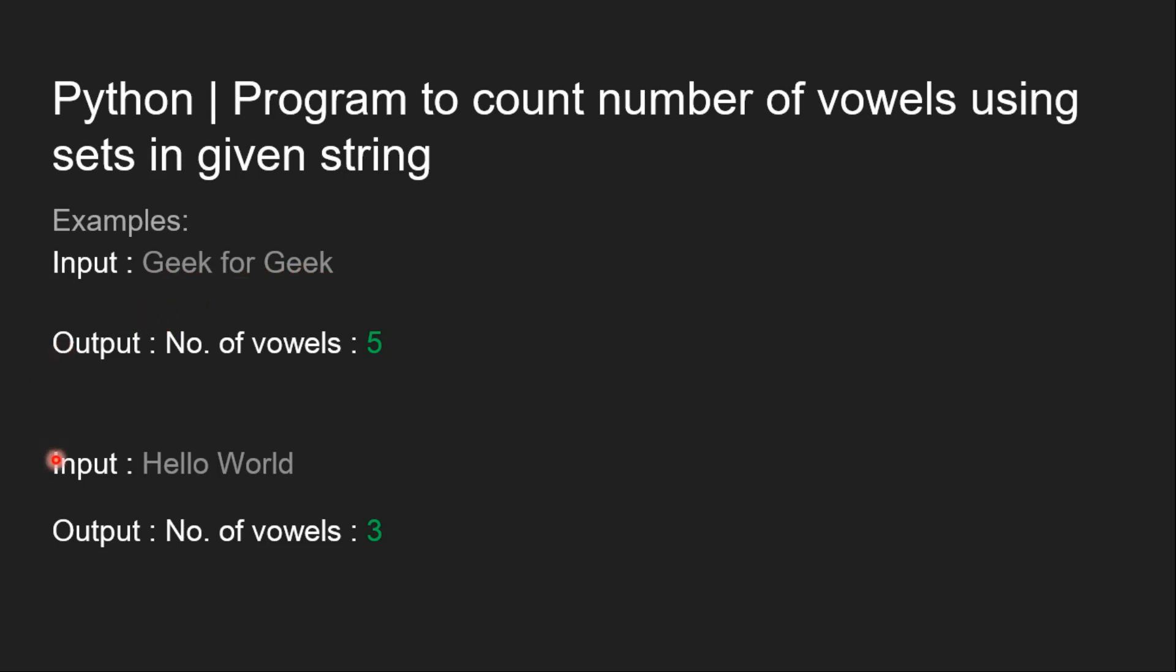And the second input we have Hello World. The output should be 3 which are number of vowels in the input as e and 2 o's. So let's have a look at the solution of this problem.